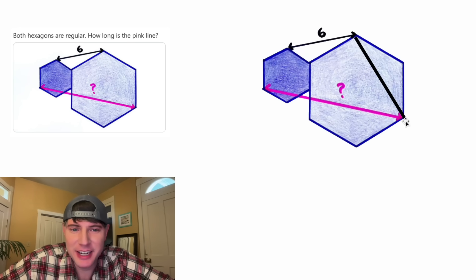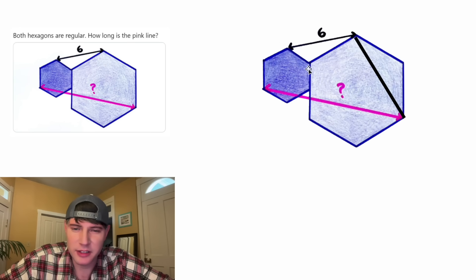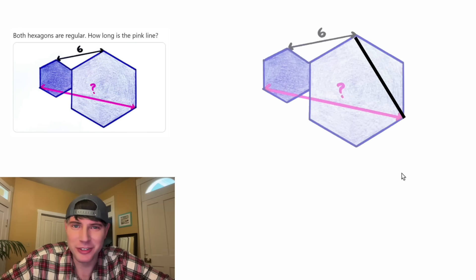For the first step, let's connect these two vertices, and let's see if I can dim this. That's cool. I might start doing that from now on. That'll be easier to see what I'm drawing.